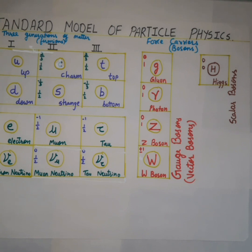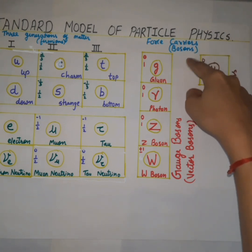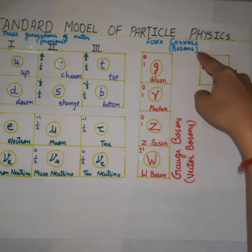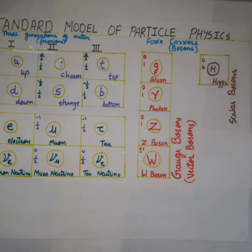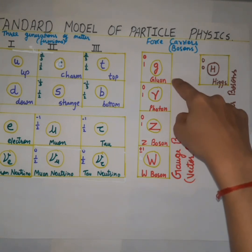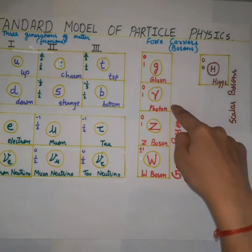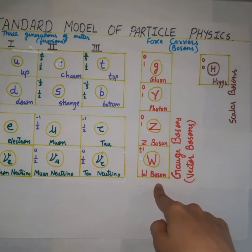Fundamental forces result from the exchange of force carrier particles which belong to a broader group called boson. So as a force carrier, all these are bosons. Particles of matter transfer discrete amount of energy by exchanging bosons with each other. Strong force is carried by the gluon, electromagnetic force is carried by the photon, and the weak force is carried by the W and Z bosons.